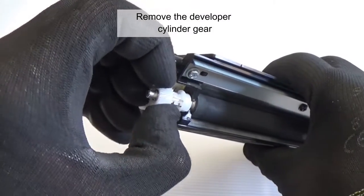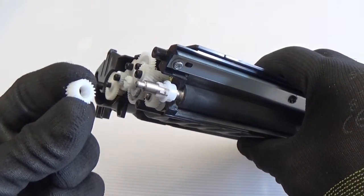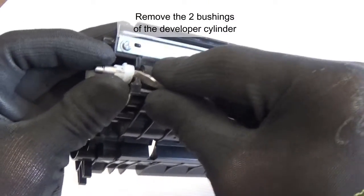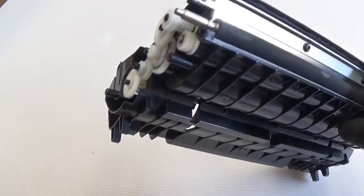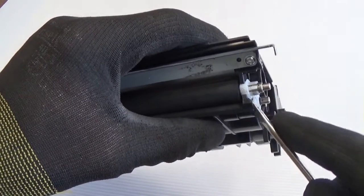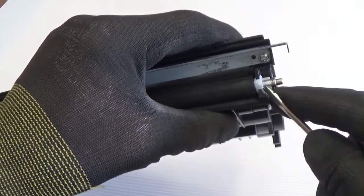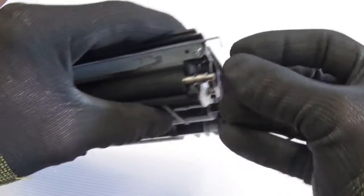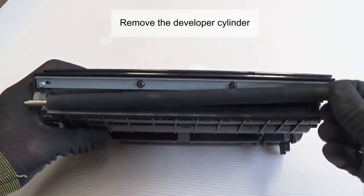Remove the developer cylinder gear. Remove the two bushings of the developer cylinder. Remove the developer cylinder.